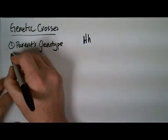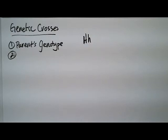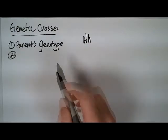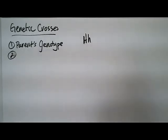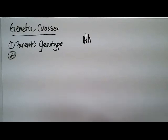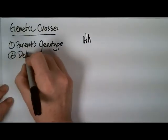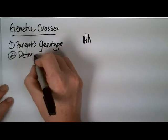The second thing you then need to do, when you read through the problem, is determine — once you have the parent's genotype — the alleles that would be in each of the gametes. In other words, you need to figure out all the different possible gametes that that parent could make.